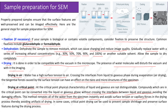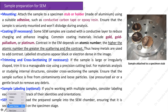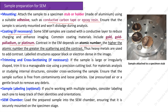Mounting: attach the sample to a specimen stub or holder made of aluminum using a suitable adhesive such as conductive carbon tape or epoxy resin, ensuring the sample is securely mounted. Coating, if necessary: some SEM samples are coated with a conductive layer to reduce charging and enhance imaging. Common coating materials include gold, gold-palladium, or platinum. Contrast in the electron microscope depends on atomic number — the higher the atomic number, the greater the scattering and contrast — so heavy metals are used to add contrast, and labeled structures appear black or electron-dense in the image.